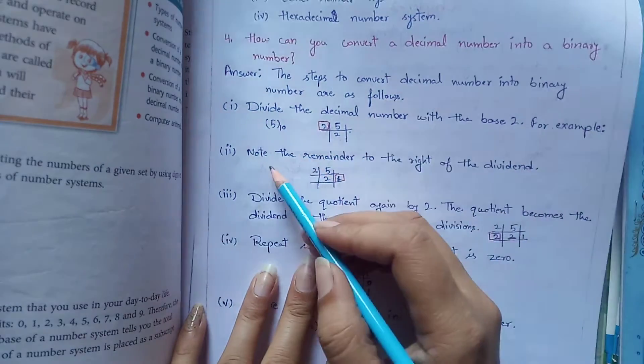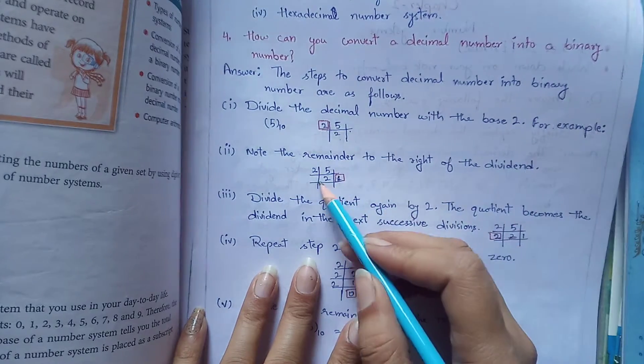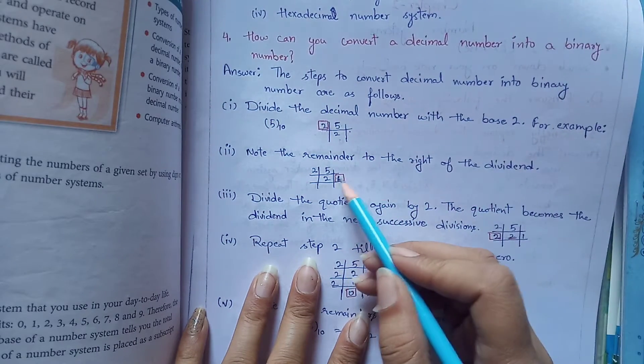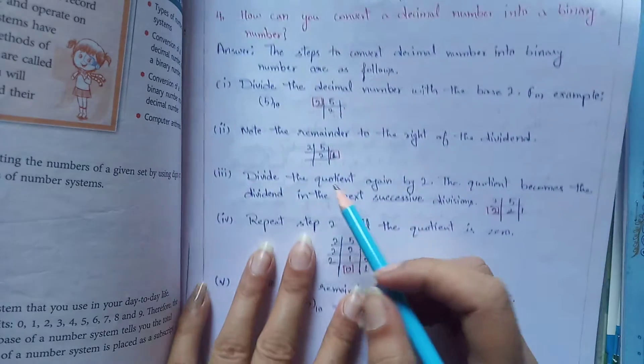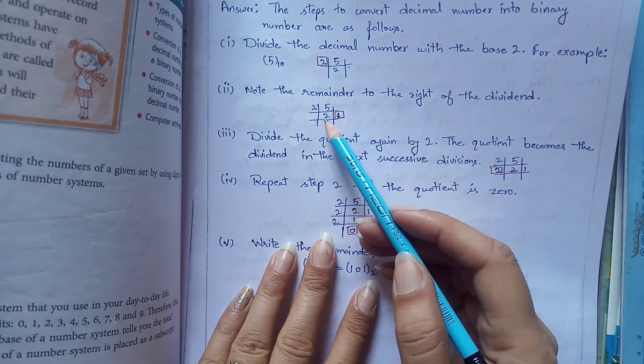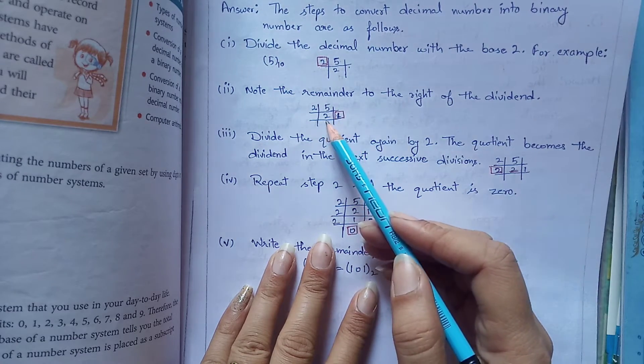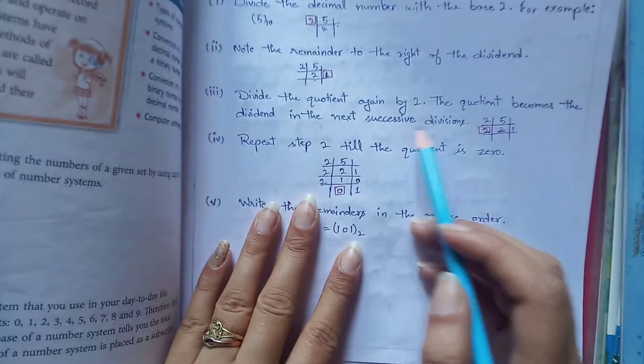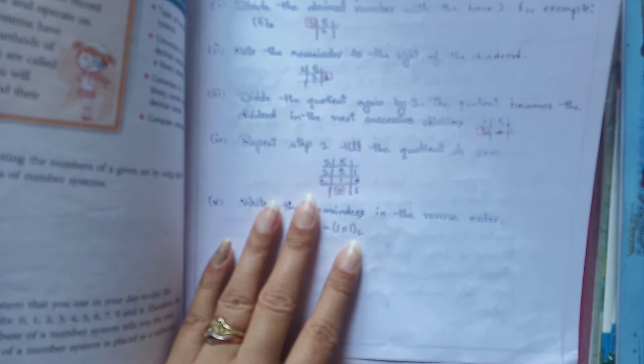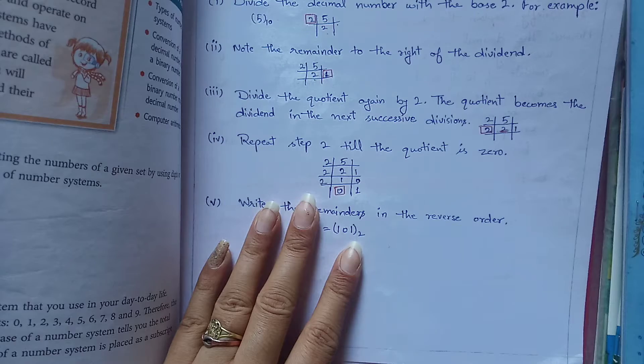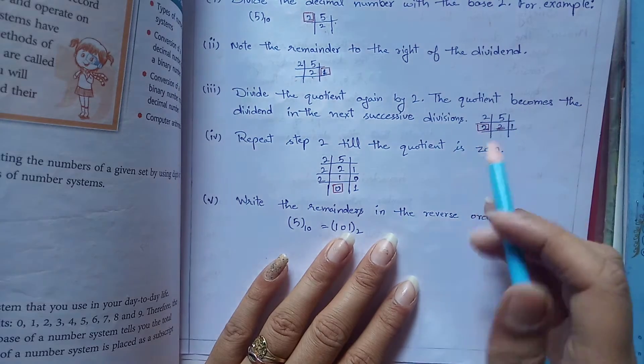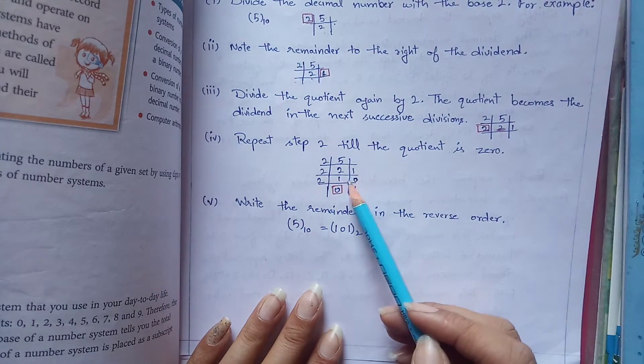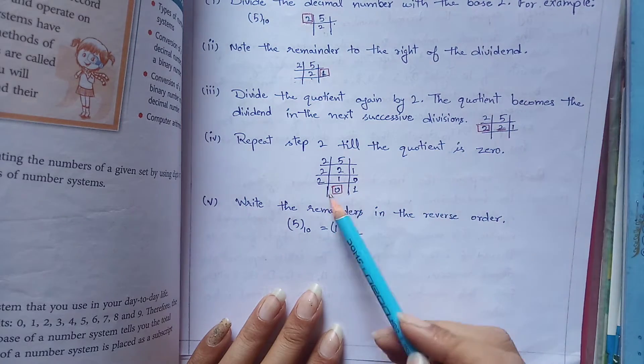Second step is note the remainder to the right of the dividend. I have remainder 1. Third step is divide the quotient again by 2. Now the number obtained as quotient becomes the dividend. In the next successive division, my quotient becomes dividend and I divide again from 2.